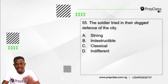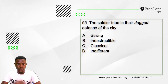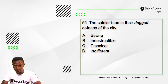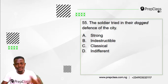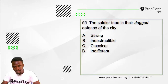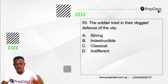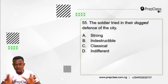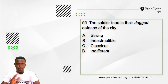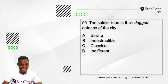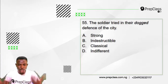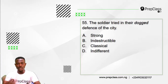Moving on to question 55. Remember we are to select the option opposite in meaning to the word or phrase in italics. Question 55 reads: the soldier tribe in the dogged defense of the city. The word in italics here is 'dogged.' Option A: strong. Option B: indestructible. Option C: classical. Option D: indifferent. Which of these options is the opposite meaning to 'dogged'?